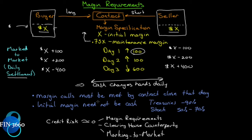Chances are if you get a margin call, you're closing positions — you're not meeting the margin call. You're not going to be able to meet the margin call unless you have another account with that broker where you can say, 'I have securities in this other account — use that as collateral,' or you have a relationship with a bank that your broker knows about. Other than that, you cannot meet a margin call by the close of the day unless you already have the money in place. If not, you're closing positions.